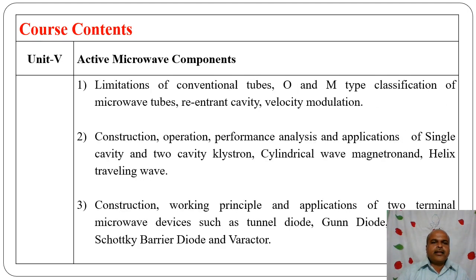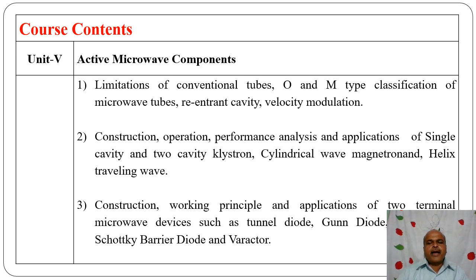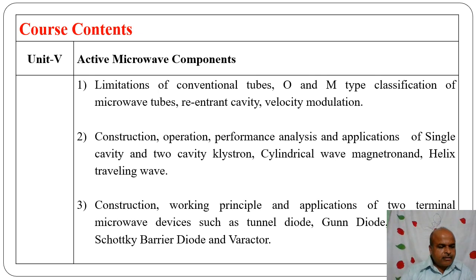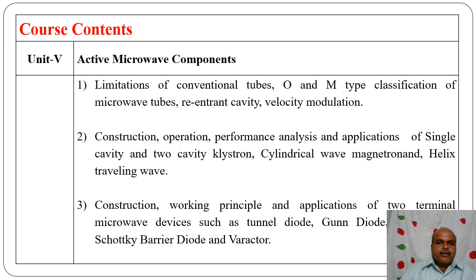Chapter five covers active microwave components. We study limitations of conventional tubes — there are five limitations, which are overcome in O-type and M-type tubes (O means linear beam tubes, M means cross-field tubes). We classify O-type and M-type tubes, study components of O-type tubes, reentrant cavity, velocity modulation, and construction, operation, performance analysis, and application of single-cavity klystron, two-cavity klystron, cylindrical magnetron, and helical traveling wave tube.